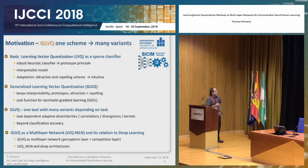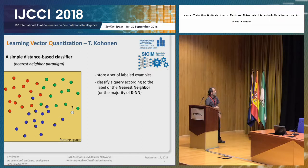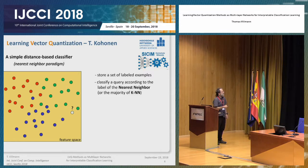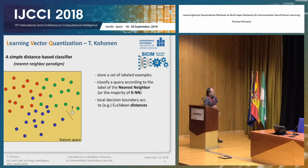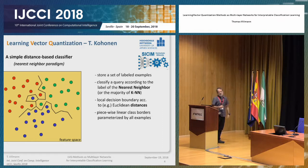So this is the outline of my talk. I will start with learning vector quantization as motivated by Kohonen, and let's start with a simple distance-based classifier. The paradigm is the nearest neighbor approach. If we have a nearest neighbor classifier, then we have to store a set of labeled examples and classify a new data point according to the label of the nearest neighbors. Doing so, we have local decision boundaries, and usually we use Euclidean distance, ending up with piecewise linear class borders. So why don't we exactly do that?